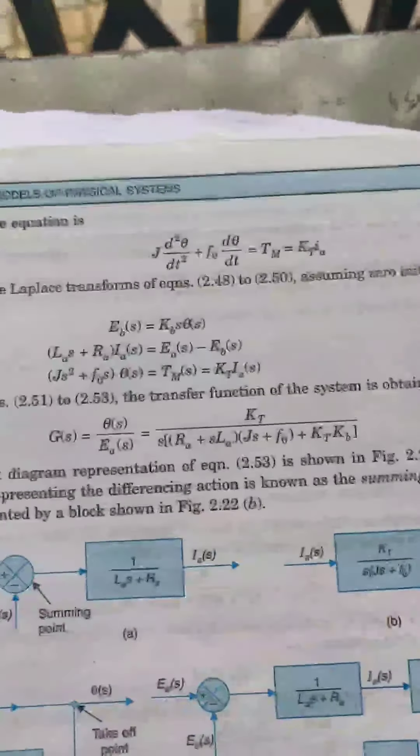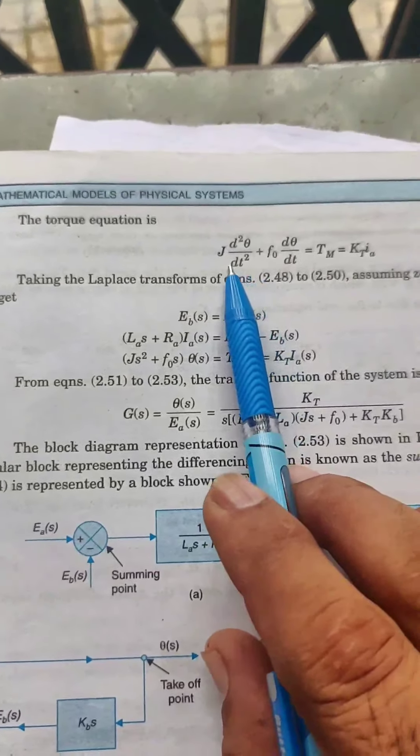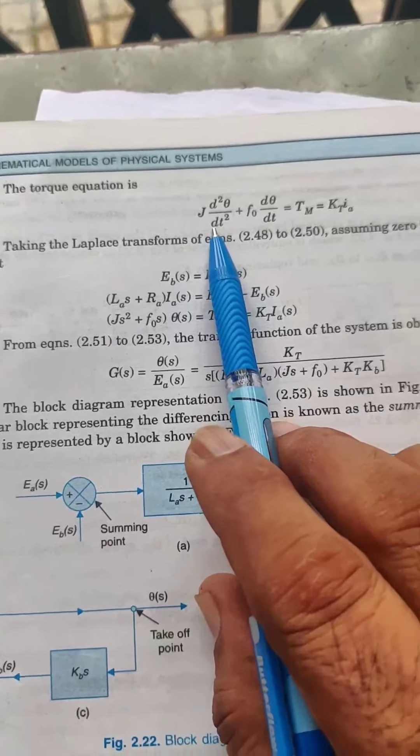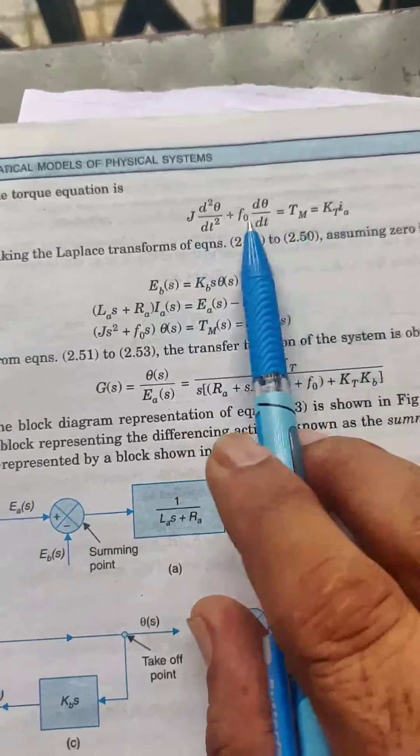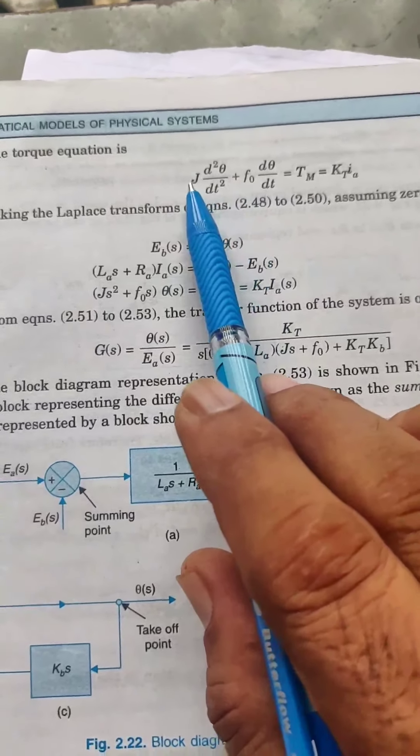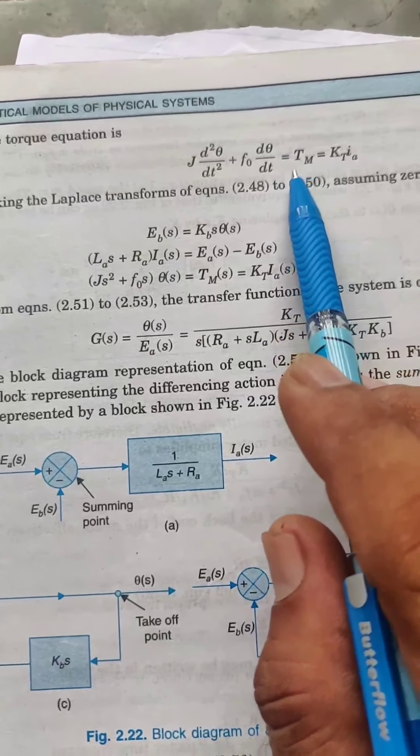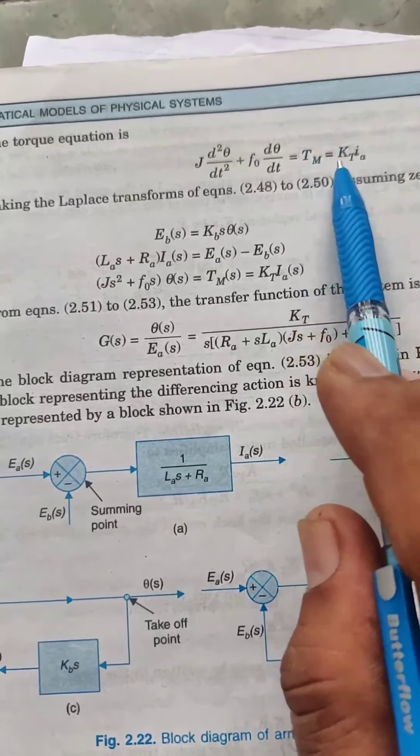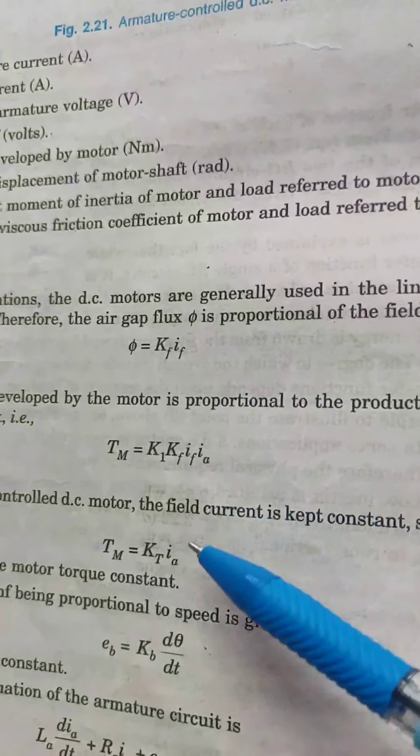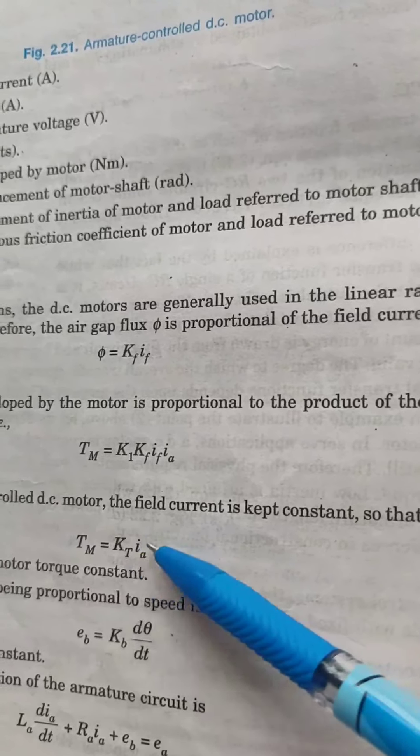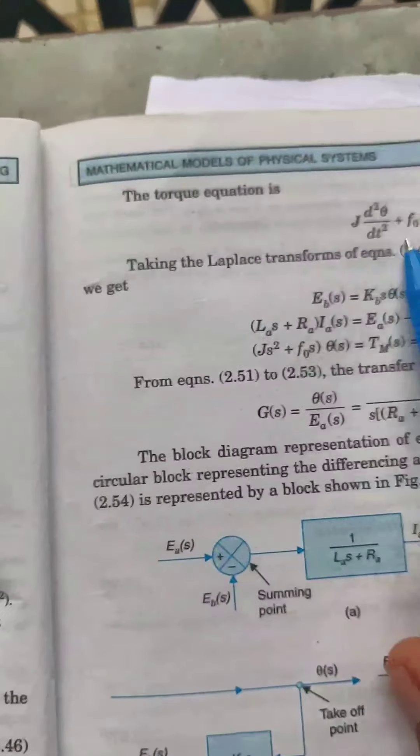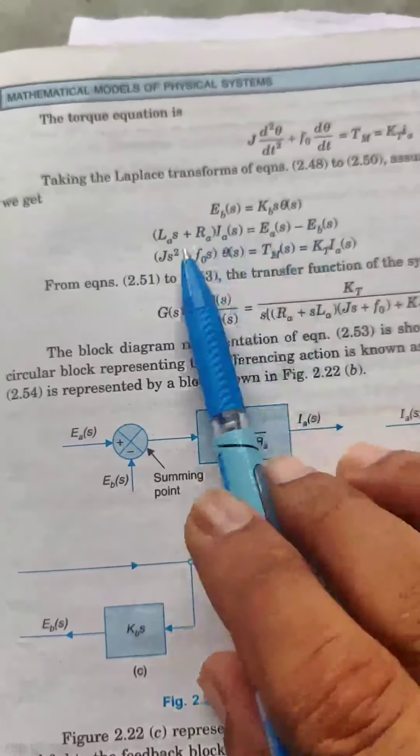Now the next equation according to the mathematical generation of the mechanical system: J d²theta by dt² plus F0 d theta by dt equals TM motor torque, which equals KT IA. Both equations are equal and the three equations are written.